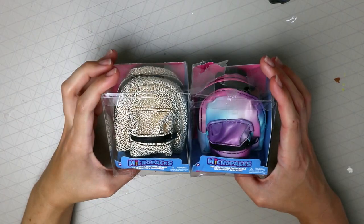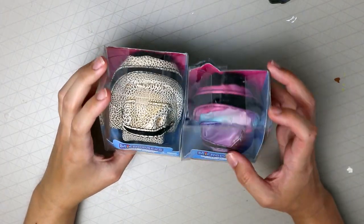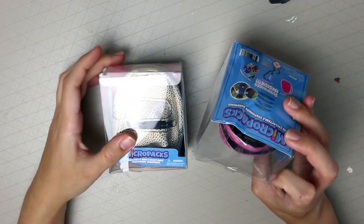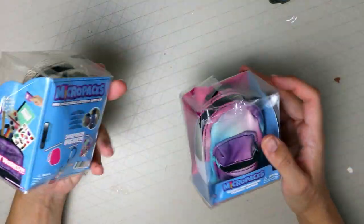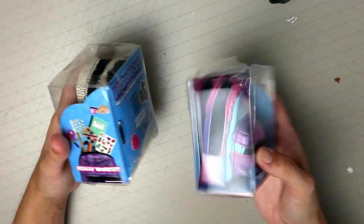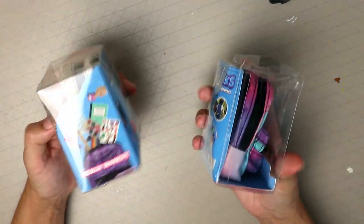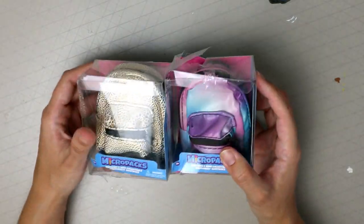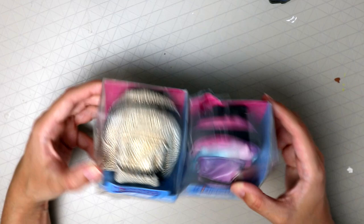Hi guys, so today I'm gonna be unboxing these micro packs with mini stationery items in them. I saw this on Instagram a while ago and I couldn't find them in the UK. I think they were out of stock in the toy shop and then I ended up finding them on Amazon. I will put a link in the description.